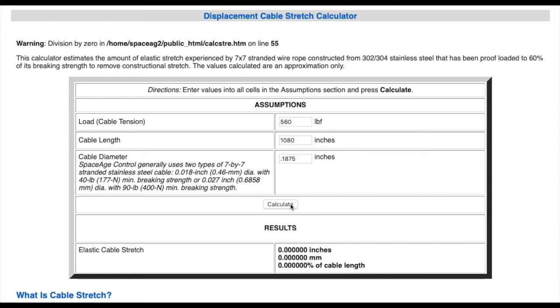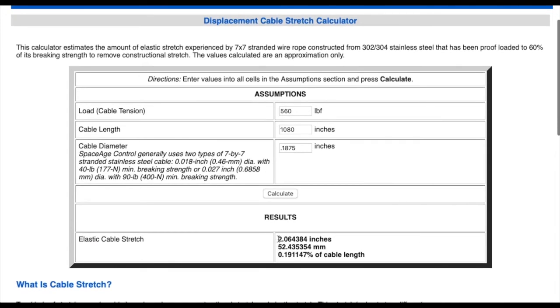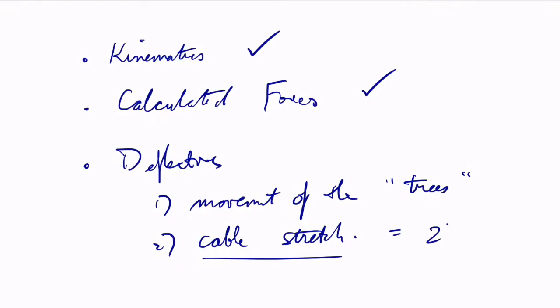The cable that came with my kit was 3/16 of an inch, which is 0.188. We're going to calculate that. Holy cannoli, two inches of stretch! Let's keep that in mind. That's a good bit of stretch.